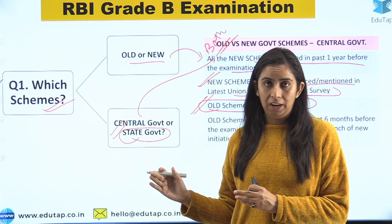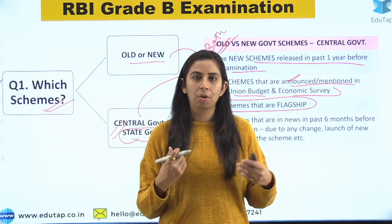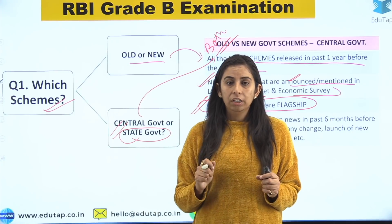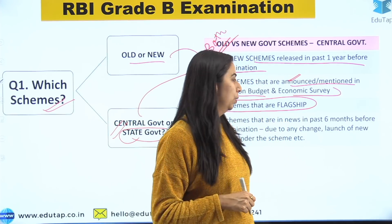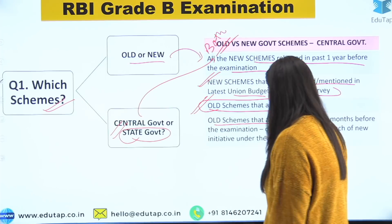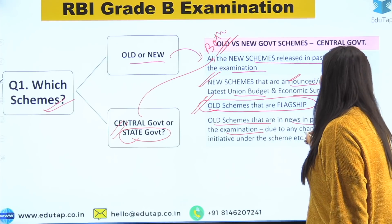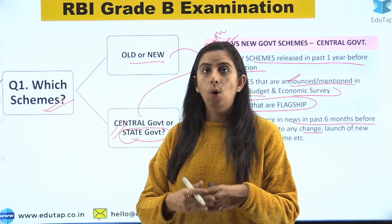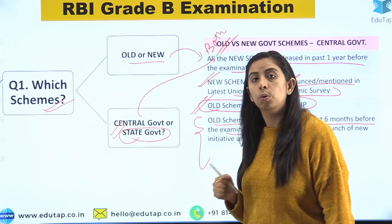Coming to old schemes, you don't need to cover all old schemes. Rather, you need to cover all flagship schemes — those being run by the government for a very long time, which have a lot of other schemes under their ambit and are the flag bearer of one particular ministry. Can you recall any such scheme? If yes, let me know in the comments. These flagship schemes from old ministry schemes are what you need to prioritize.